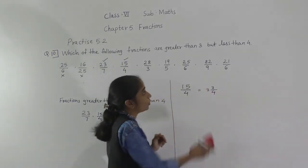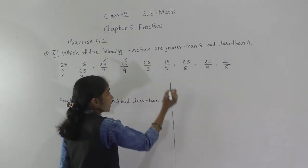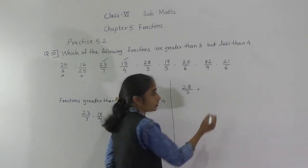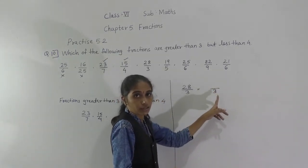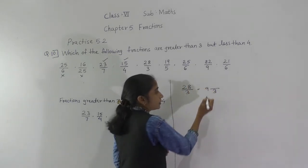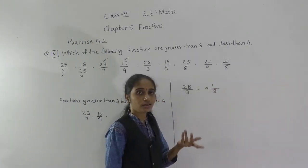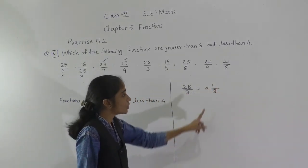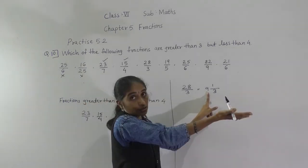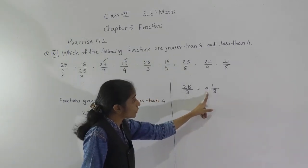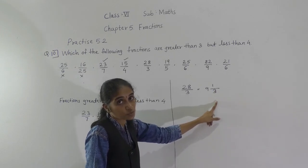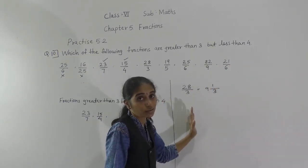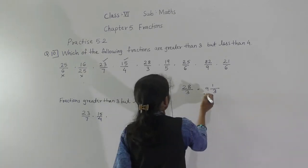Next: 28 upon 3. Convert: 3 nines are 27, remainder 1, giving 9 and 1 upon 3. The whole number part is 9, which is greater than 4. We want fractions less than 4, so this fraction will not come.